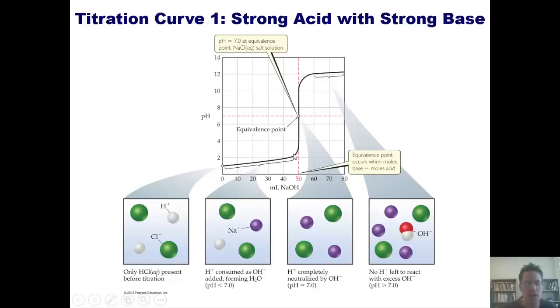Right as you get to this point, this pH starts jumping dramatically and you get to a location right in the middle in which the amount of moles of base and acid that have been added together are equal. After that, the pH continues to rise as more strong base is added until you get up to a strong base pH above 12.